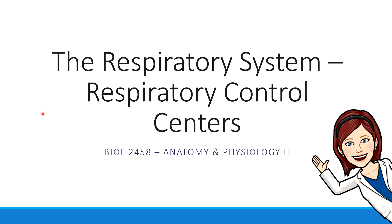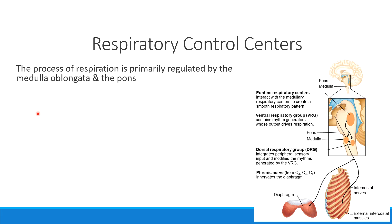Hi everybody, Dr. Aulis here. In this short video, we're going to talk about the nervous system structures that help to regulate the process of respiration. When we think about controlling the process of respiration — the inspiration and expiration rates — the two primary brain structures that regulate this process are the medulla oblongata and the pons.